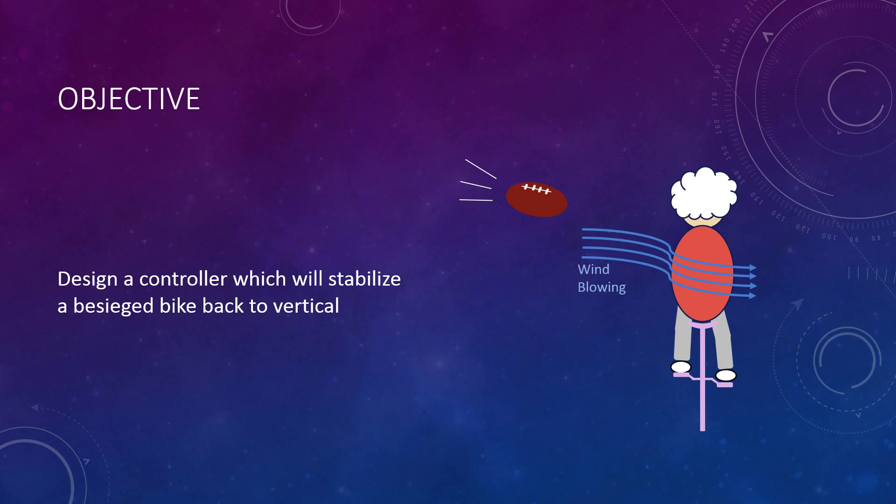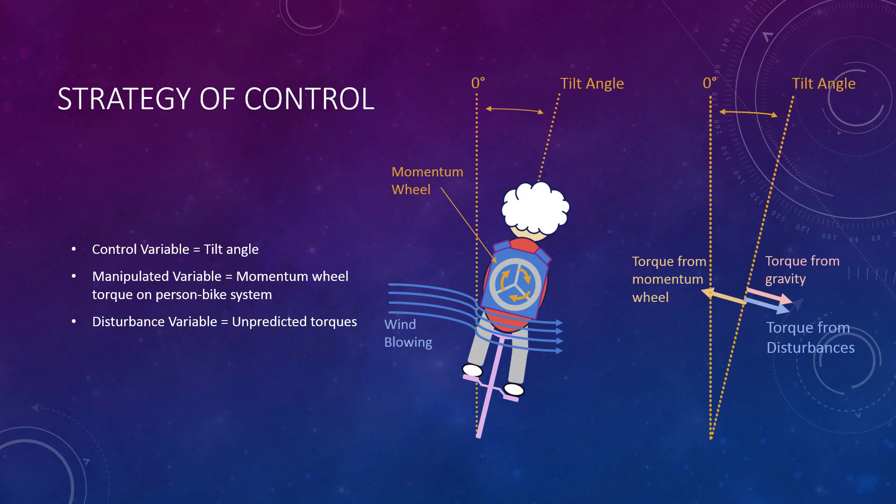In our model, we had to account for all the torques that would be involved in moving a person on a bicycle back to vertical from their tilt angle. Those torques would be the torque due to gravity and then the torque from disturbances, which we mentioned earlier. And we were going to use this torque from the momentum wheel in order to counteract that.